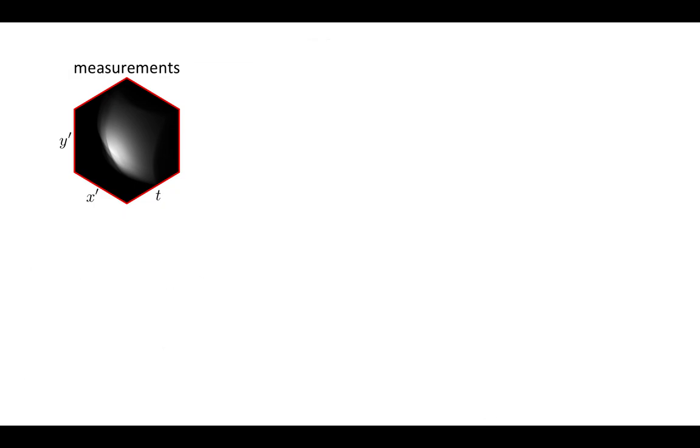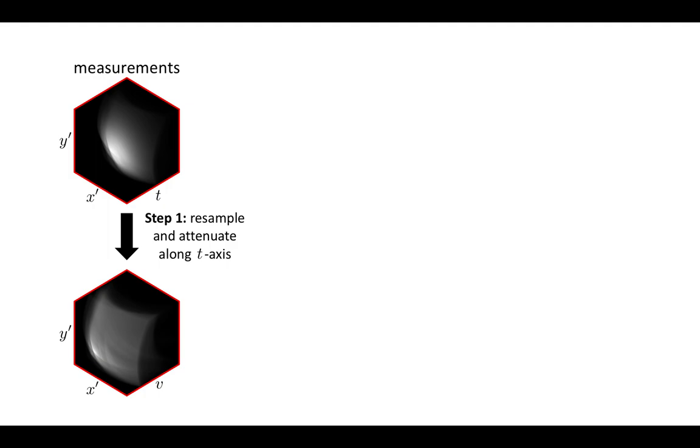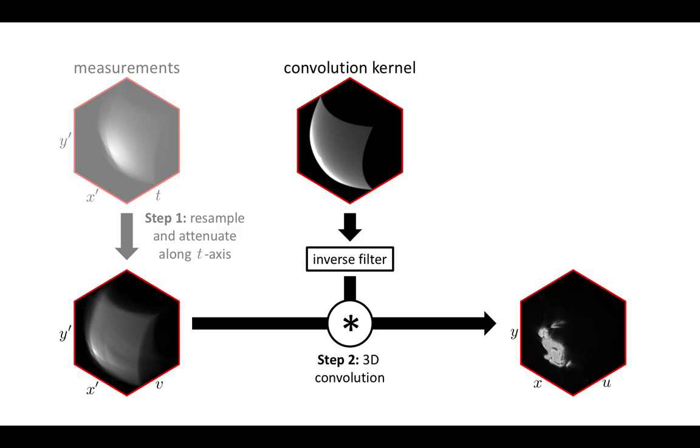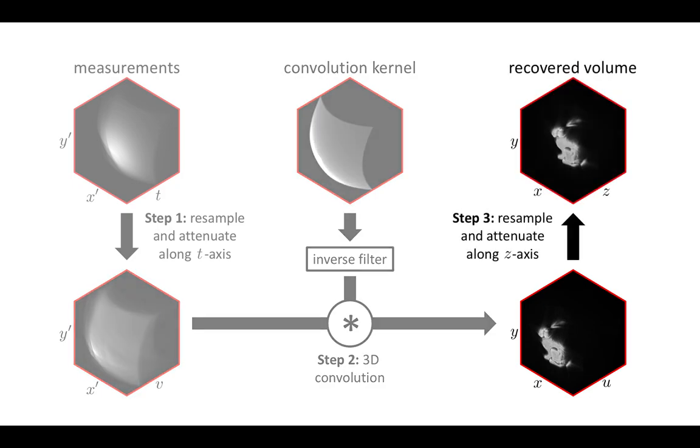Reconstructing the hidden object from these measurements requires three simple steps. Step 1, re-sample the measurements along the time axis. Step 2, convolve the result with an inverse filter. This can be done very efficiently in the frequency domain. Step 3, re-sample the result along the depth axis to recover the hidden object.